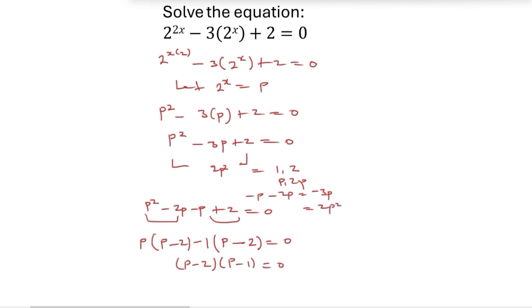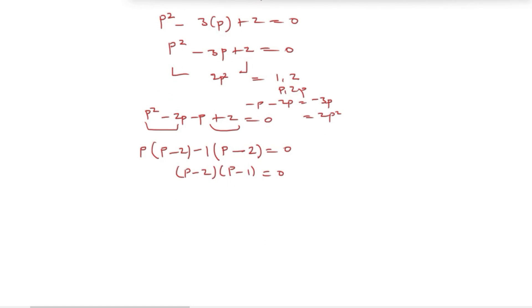So let's continue solving. P minus 2 equals zero, or p minus 1 equals zero. So p equals 2, or p equals 1. They go over equals and become positive. But we said that 2 raised to x equals p, so we're going to write 2 raised to x now equals 2, or 2 raised to the power x equals 1.